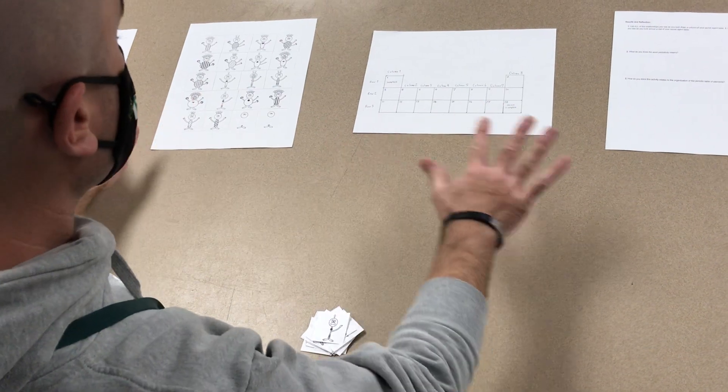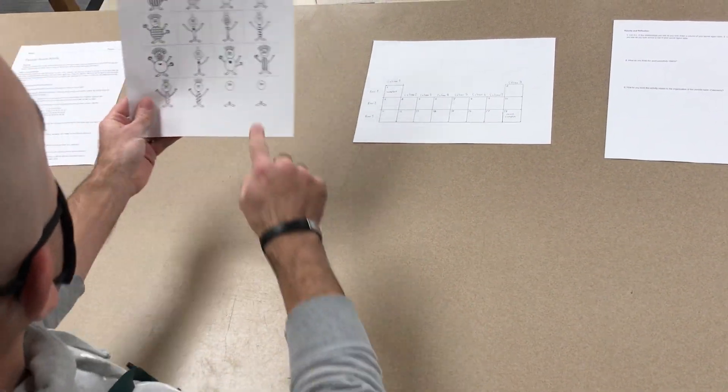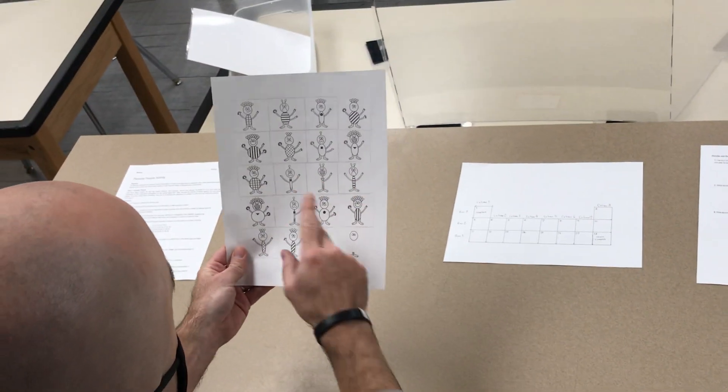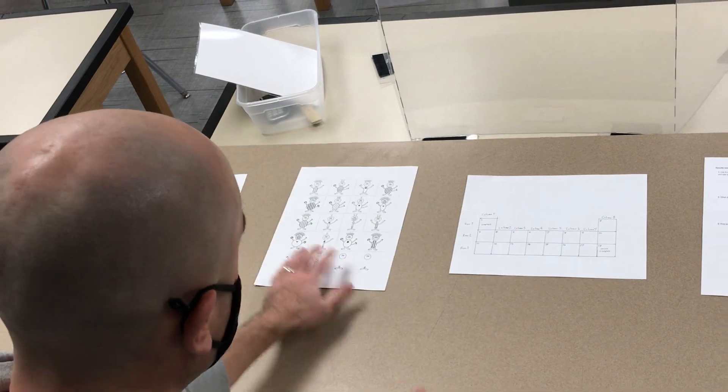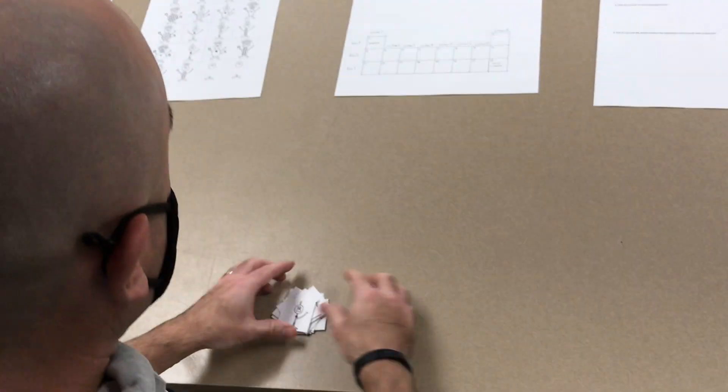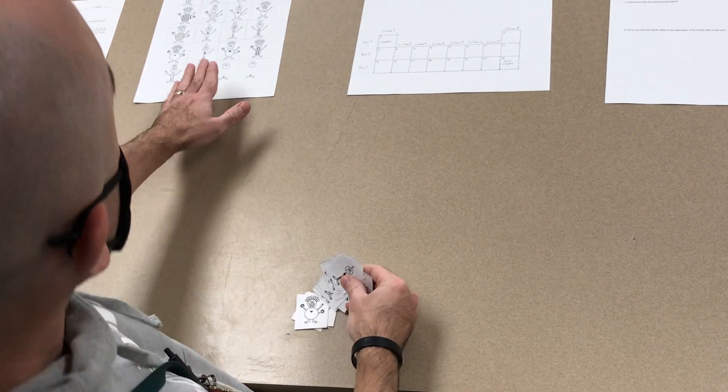So once you print all these sheets out, this puzzle piece sheet, you're just gonna cut out all those squares and then set them to the side. And I'll be honest, when you look at that sheet it is kind of overwhelming - you're like where do I start?